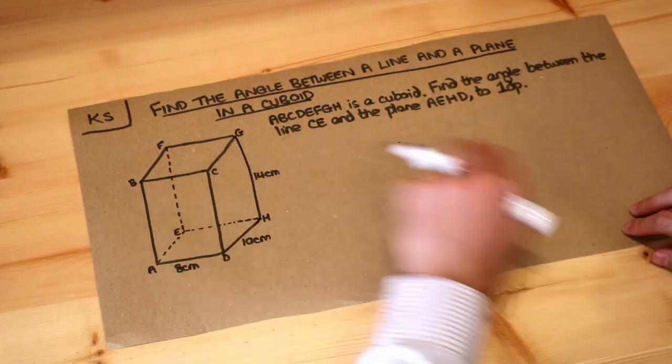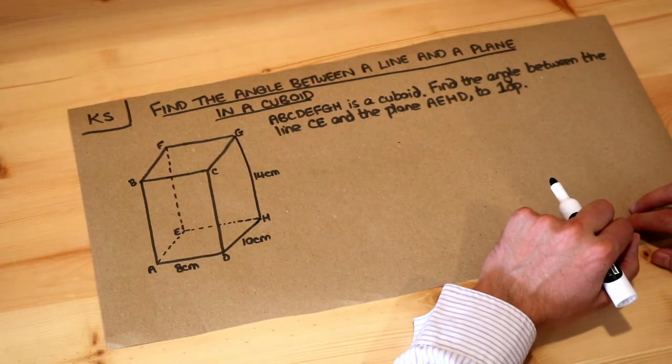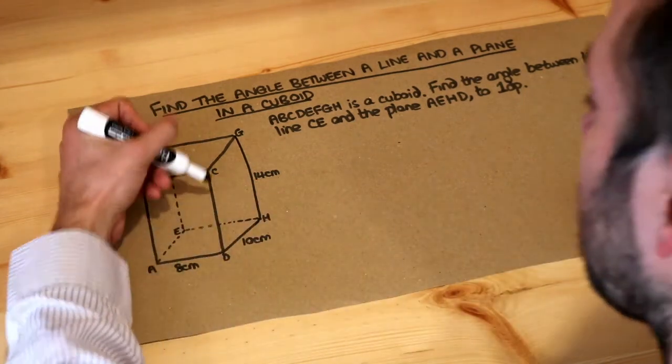So we've got this cuboid here and we're going to find the angle between the line CE, so if I draw the line CE it's here.